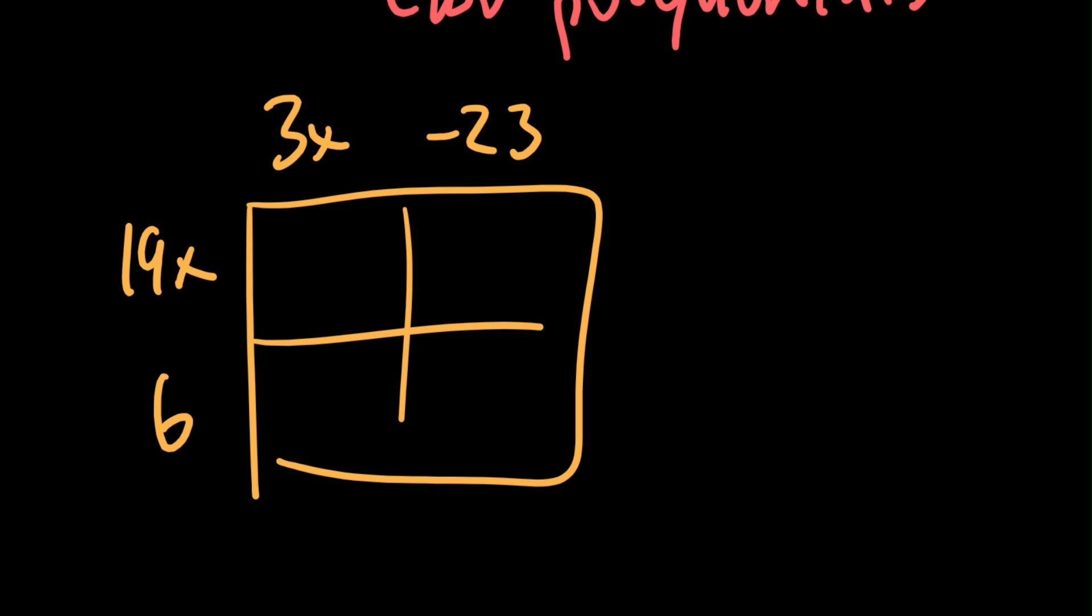So 19x times 3x is our first thing, so we have 57x² in the top. We're going to do this one, so 3x times 6, that's 18x. -23 times 19x, that's going to be -437x. You can check that with a calculator if you'd like. Then -23 times 6, which is going to be -138.